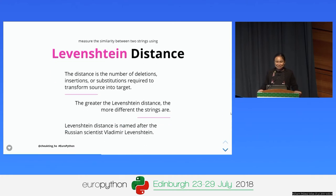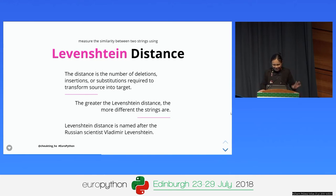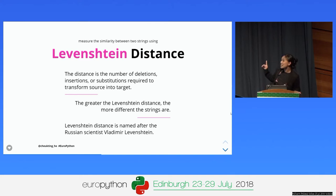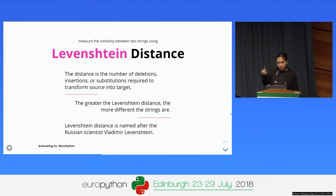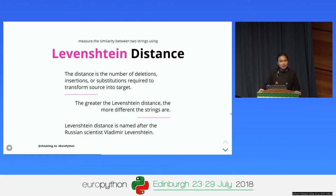So we have something smart coming up: Levenshtein distance, named after a Russian scientist. Basically it gives you an integer that says how many alterations you have to make to change string A to string B. If you delete one character that's one change; if you change an 'a' to an 'e' that's also one alteration; adding something is also one. If the Levenshtein distance is bigger, the two strings are more different. Very intuitive.